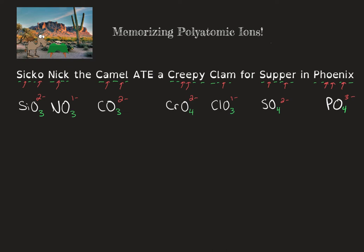This sentence gives you a base of seven polyatomic ions. Now I'm going to show you how we can derive several others from this base sentence. For some polyatomics, if I decrease the number of oxygens by one, I can find several different polyatomic ions. For instance, if I take nitrate, chlorate, sulfate, and phosphate, and decrease the oxygens by one, I get NO₂, ClO₂, SO₃, and PO₃.